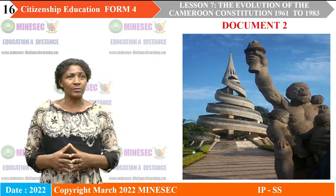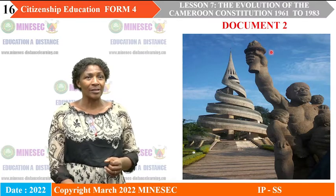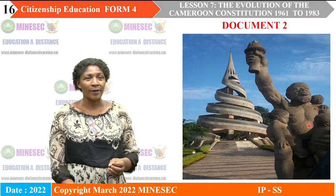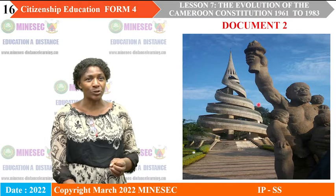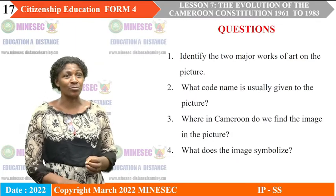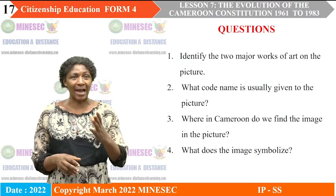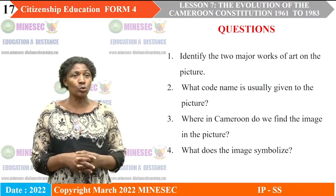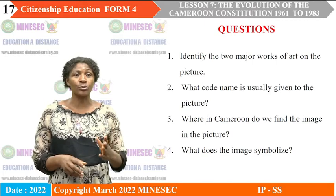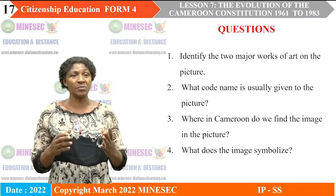Now let's look at Document 2 — observe this document, titled Document 2. We find some wonderful architectural work. The questions to explore it: Question 1, identify the two major works of art on the picture. Question 2, what code name is usually given to the picture? Question 3, where in Cameroon do we find the image? Question 4, what does the image symbolize?